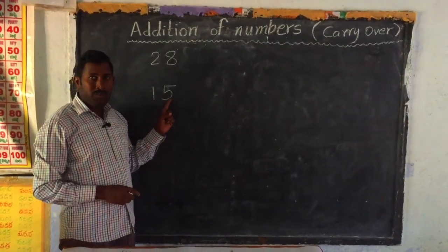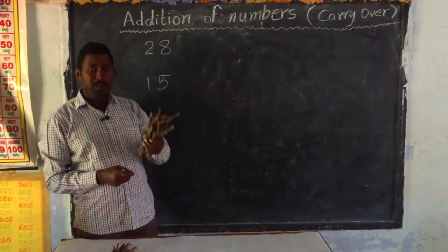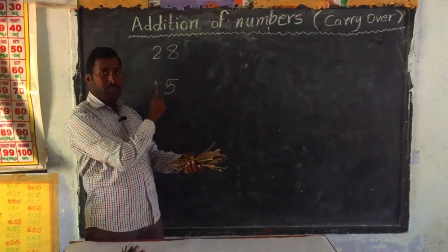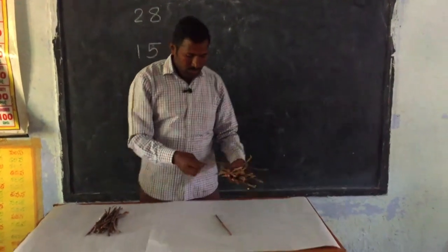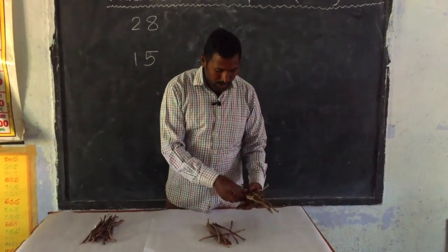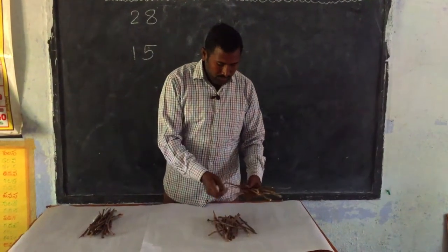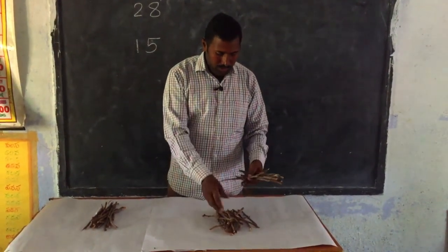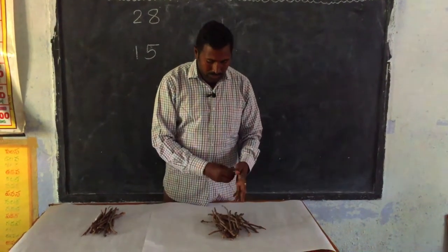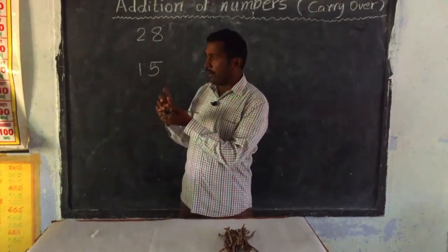I am taking some sticks, children. How many sticks do I need first? 28 sticks. I am counting 1 through 28. Now, children, I am counting these 28 sticks into bundles of 10. 1 through 10 — I am tying with a rope. This is one bundle. How many sticks are in this bundle? 10 sticks.